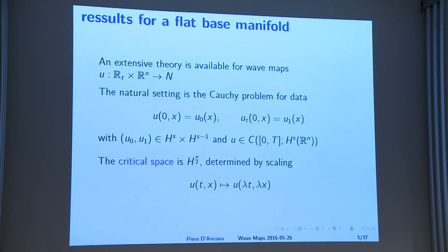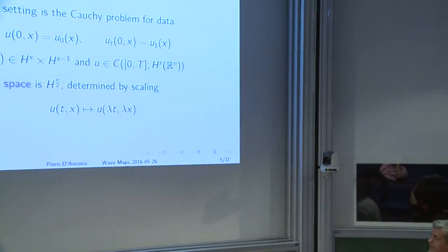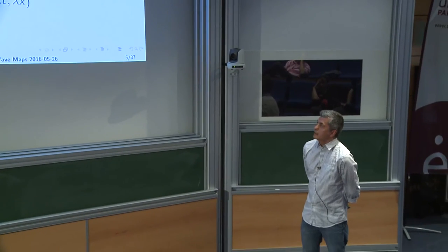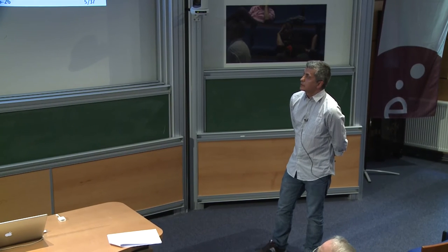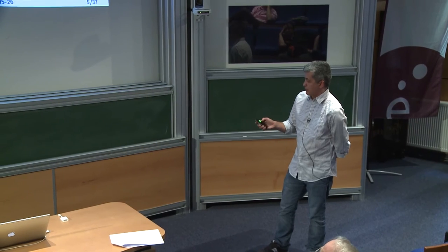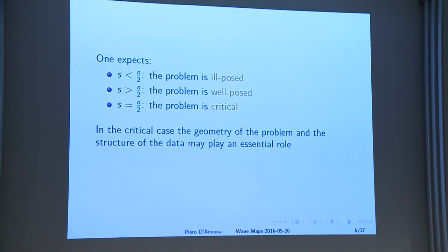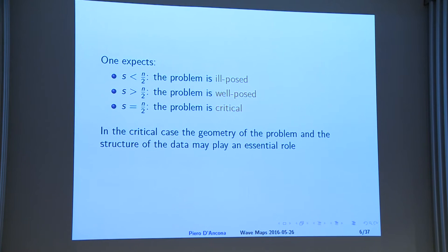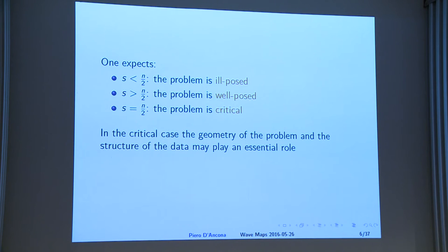You immediately check that you have a nice scaling. The critical space is H^{n/2}, and the critical index is n/2. The natural expectations follow immediately: the problem is critical when s equals n/2, super-critical when s is lower than n/2 — you expect something bad to occur — and if s is larger than n/2, you expect well-posedness in some sense.